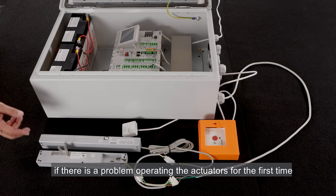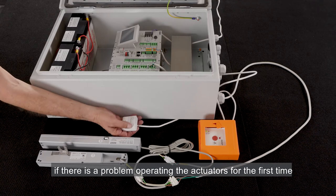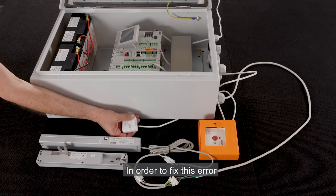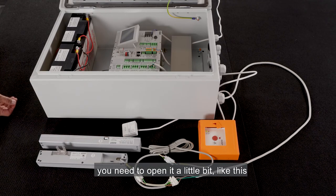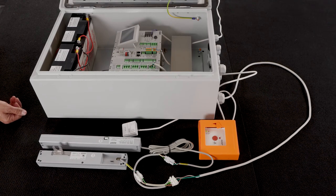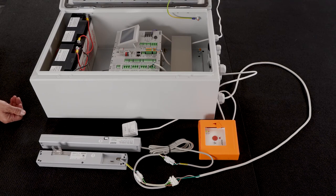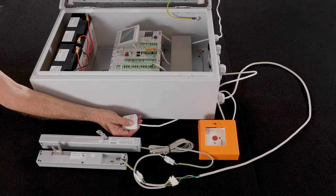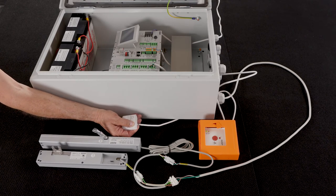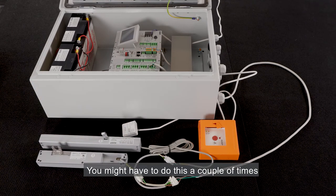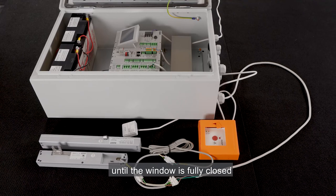If there is a problem operating the actuators for the first time, the actuator will stop and reverse. In order to fix this error you need to open it a little bit, like this, and then close again. You might have to do this a couple of times until the window is fully closed.